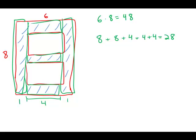And so if we add that up, that's a total area of 28. So the brass trim takes up an area of 28 and the door is 48.